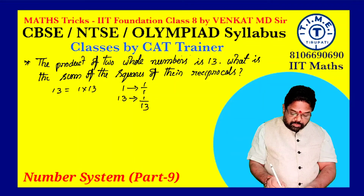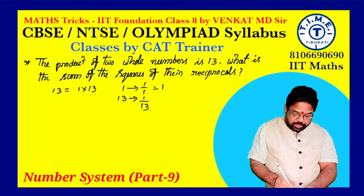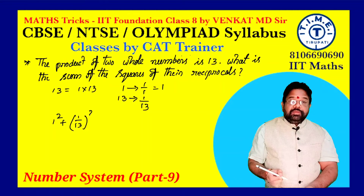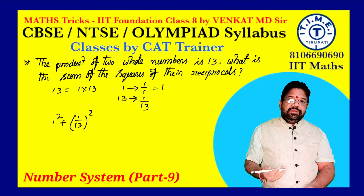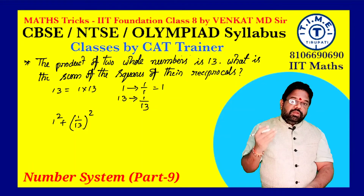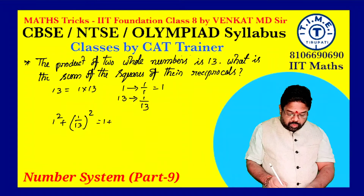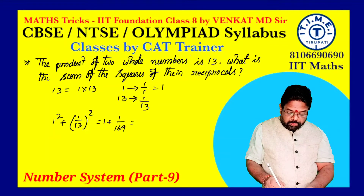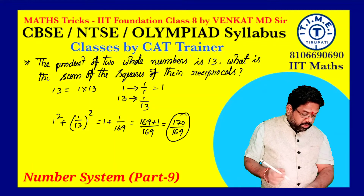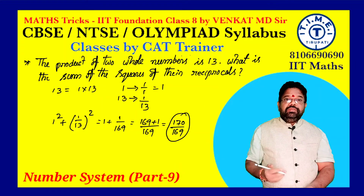We require the sum of the squares of the reciprocals: 1 squared plus (1/13) whole squared. 1 squared is 1, and (1/13) squared is 1/169. So the sum is 1 plus 1/169, which equals 169/169 plus 1/169 equals 170/169. So our answer is 170/169.